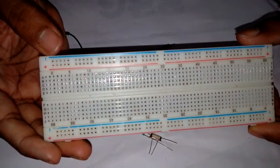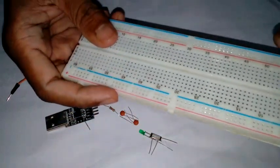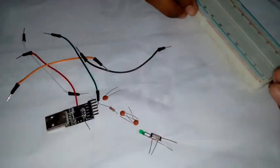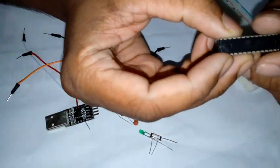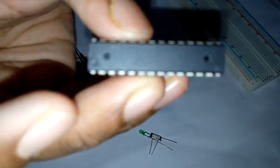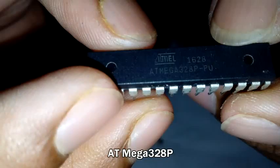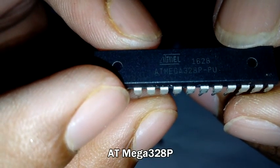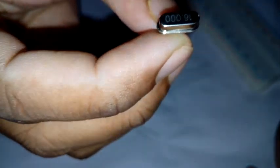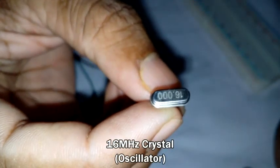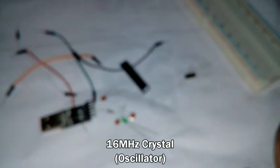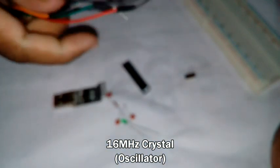For the microcontroller, we need the ATmega328 chip. We also need a 16 megahertz crystal oscillator for timing.